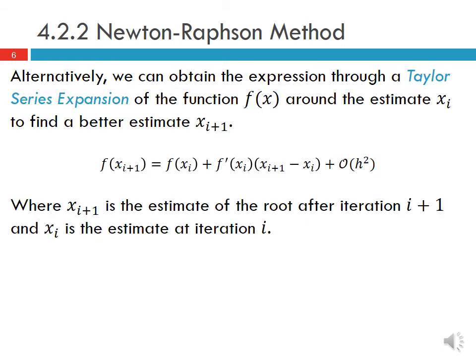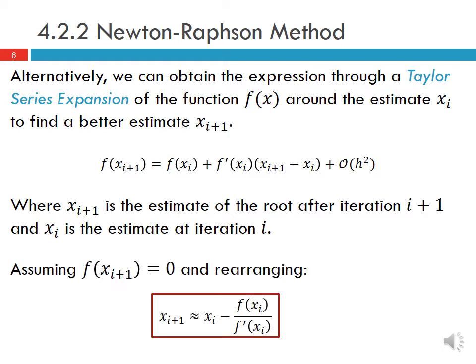Here xi plus 1 is the estimate of the root after iteration i plus 1, and xi is the estimate at iteration i. If we assume that f of xi plus 1 is equal to 0 — because we're trying to find when the function equals 0, that's our root — and rearrange, we get x of i plus 1 is approximately equal to xi minus f of xi divided by f prime of xi. This gives us the same formula as the graphical derivation.